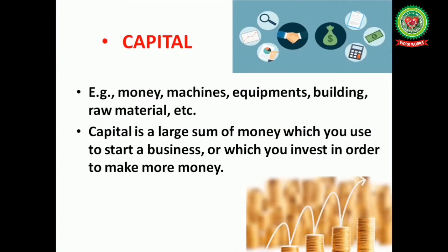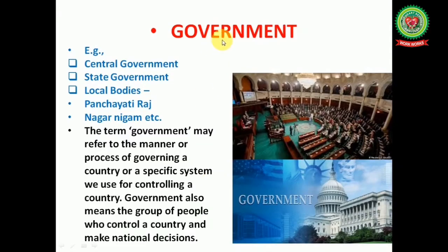The first key term is capital. For example, money, machines, equipment, buildings and raw materials are all included in capital. Capital is the large sum of money which you use to start a business or which you invest in order to make more money. Next is government — for example, central government, state government, or local bodies like Panchayati Raj or Nagar Nigam.